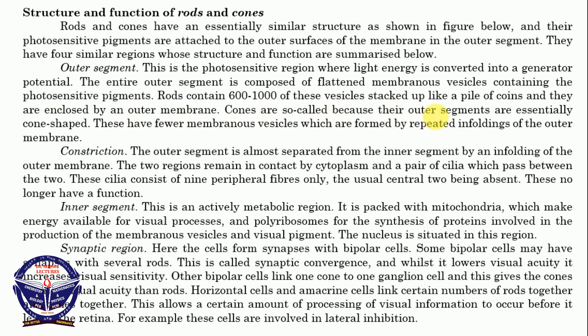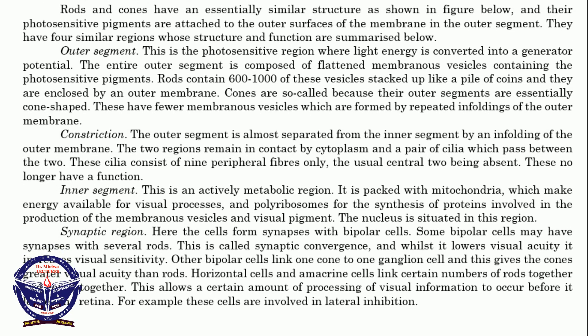Cones are so called because the outer segments are especially cone-shaped. These have fewer membranous vesicles which are formed by repeated infolding of the outer membrane. So in rods, the vesicles are arranged like a pile of coins. But in cones, the membranous vesicles are formed by the infolding of the outer membrane. So in cones it is different — we don't have a pile of coins but instead an infolding of the outer membrane, while rods have vesicles arranged like a pile of coins.